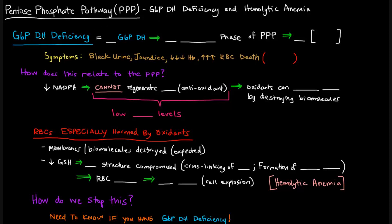Glucose 6-phosphate dehydrogenase deficiency is an X-linked genetic disease. Basically what happens is that we have low levels of glucose 6-phosphate dehydrogenase, which is the enzyme involved in the oxidative phase of the pentose phosphate pathway. So if we have a deficiency of this enzyme, we're going to have less of this oxidative phase, and the products of that phase — NADPH and ribose 5-phosphate — will be reduced.